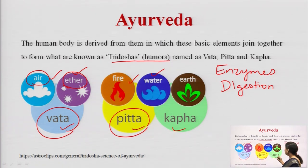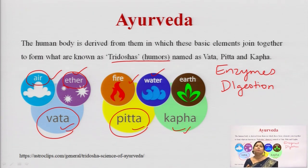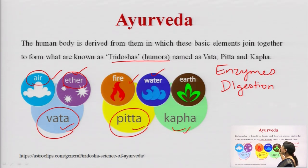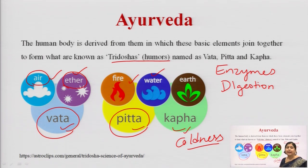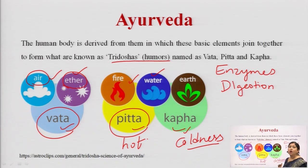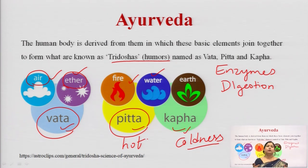The third dosha is Kapha, which is generally found in the lungs or wherever mucus secretions are present. Kapha is a mixture of water and earth and has the property of coldness — both water and earth signify a cool nature. Pitta on the other hand signifies hotness, while Vata signifies a light, dry, and lightweight nature.